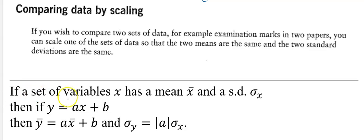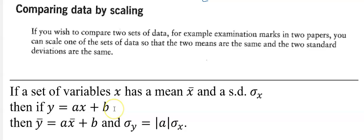This is the important bit. If a set of variables x has a mean x-bar and a standard deviation sigma x, then if y is equal to ax plus b — this is the scaling formula. To get your new scaled variable y, you multiply x by a and then add b.